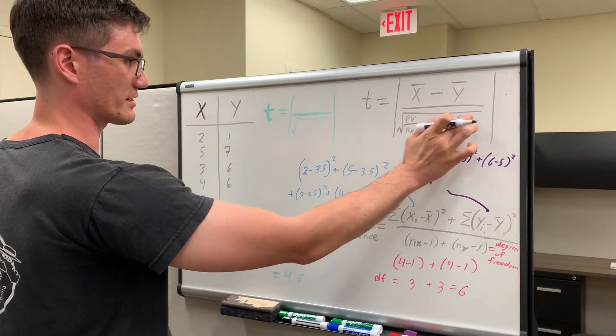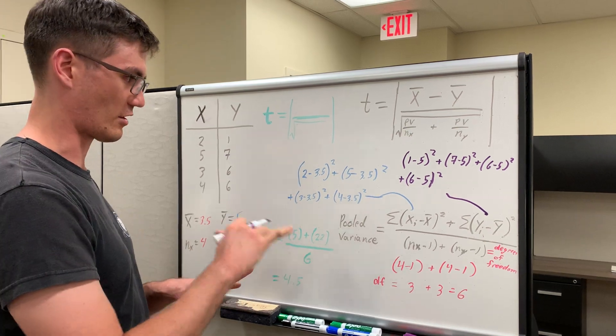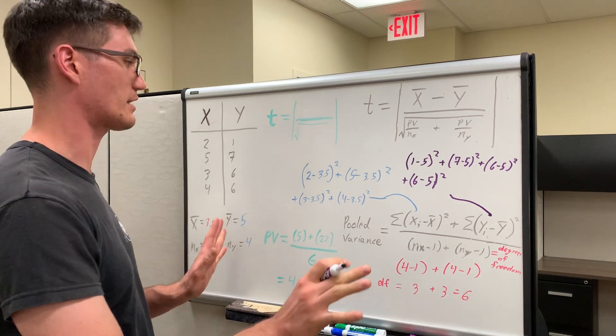So now we have our pooled variance expressions. That's the most difficult calculation of all this. So once you've got pooled variance down, you should be smooth sailing from here on out.